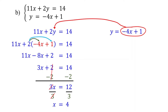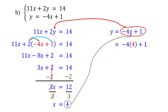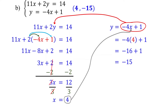Now that you have the value of x, the next step is to calculate the value of y. You can do that by plugging in 4 for x in the second equation. Negative 4 times 4 is negative 16. Negative 16 plus 1 is negative 15. Therefore, the solution to this system of equations as a coordinate pair is 4 comma negative 15, with x equals 4 and y equals negative 15.